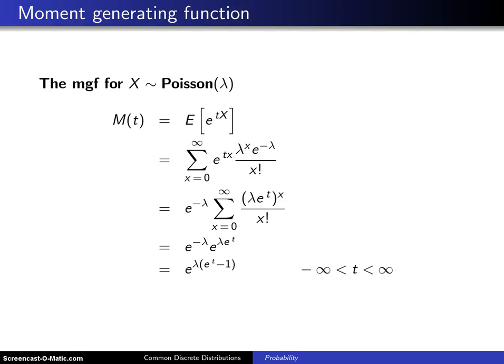Here is the moment generating function for a Poisson random variable x with positive parameter lambda. M of t is by definition the expected value of e to the t times x, and that will be the sum over the support from zero to infinity of e to the t times x times the probability mass function for a Poisson random variable, which is lambda to the x e to the minus lambda divided by x factorial.